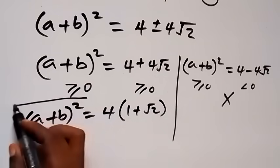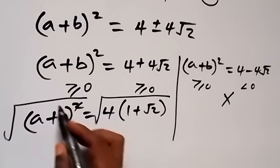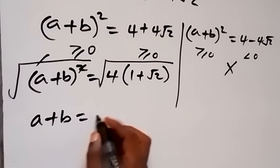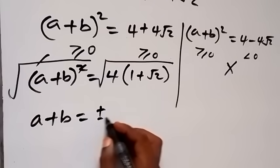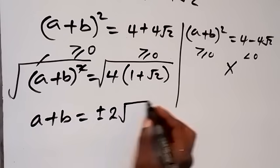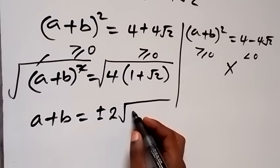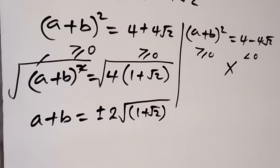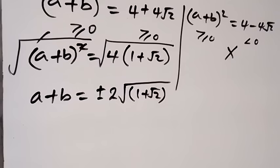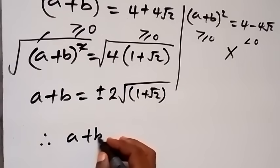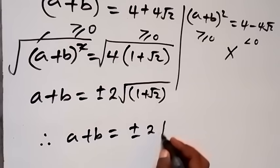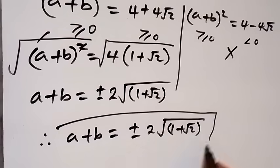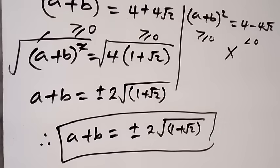Taking the square root on both sides, the square cancels on the left. a plus b equals plus or minus the square root of 4 times (1 + √2), which is plus or minus 2√(1 + √2). Therefore, the value of a plus b equals plus or minus 2√(1 + √2).